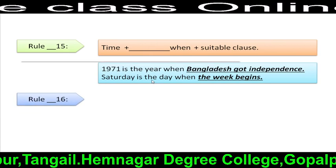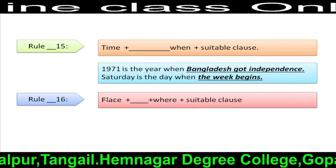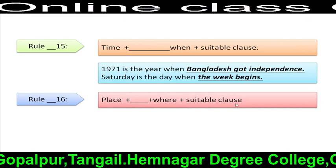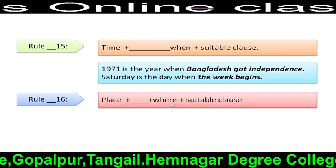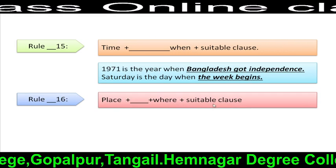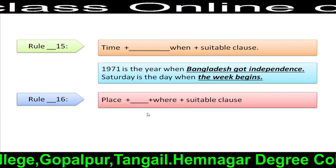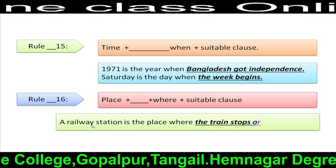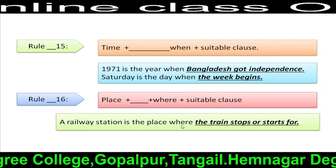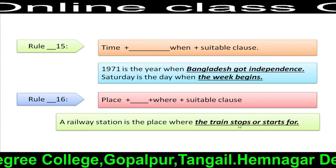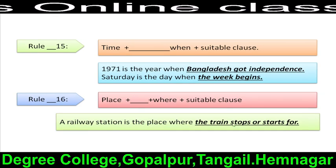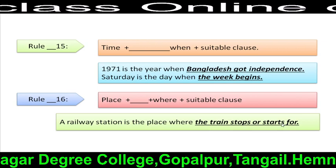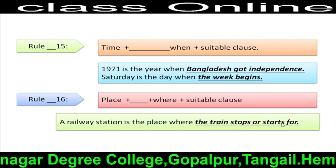Rule 16: Place + extension + where + suitable clause. That means, after 'where', we have to use a suitable clause to make the sentence meaningful. For example: 'A railway station is the place where the train stops or starts.' Here, 'the train stops or starts' is the suitable clause.